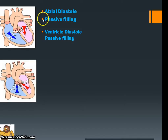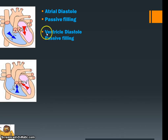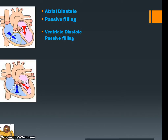Atrial diastolic is the relaxation phase occurring in the atria — so it's the atrial diastolic phase, passive filling. Then we have ventricular diastole — diastole still means relaxing — occurring in the ventricle chamber. Just by knowing what these terms are called, we can understand what's actually happening.